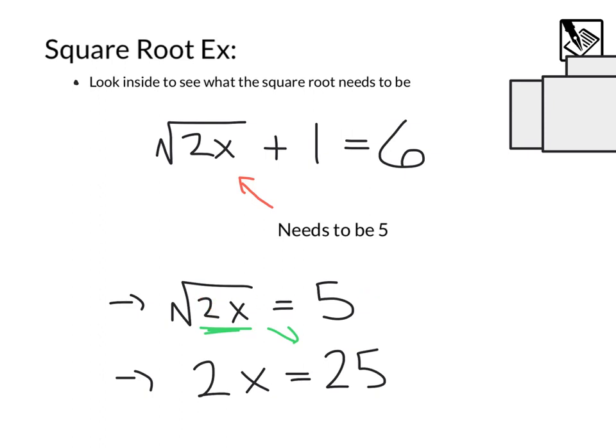So here, we kind of just looked, used our minds, and said, what does this need to be? If this needs to be 5, what needs to be inside? And that's going to give us an equation here, 25. From here, you could divide by 2 both sides, and you'd get your answer x equals 25 over 2.